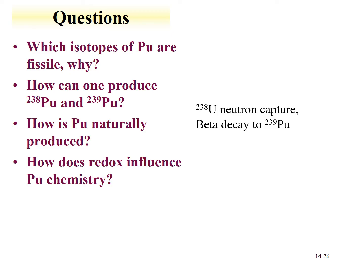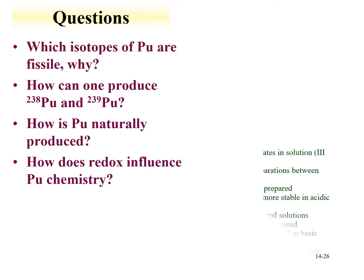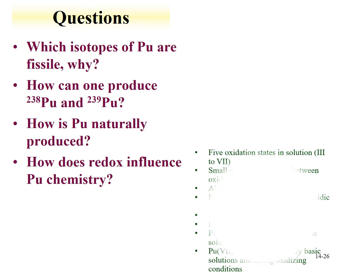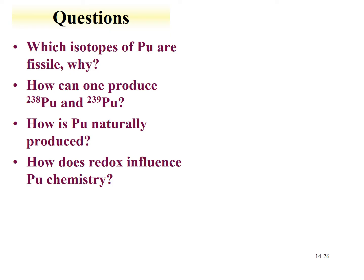How does redox chemistry influence plutonium? Plutonium has oxidation states in solution from +3 to +7 — +7 is difficult to make but can be observed. There are small energy gaps between the different oxidation states, meaning they can exist simultaneously in solution. General trends: lower oxidation states are more stable in acidic solutions, the pentavalent state is more stable in neutral solutions, and higher oxidation states are favored in basic solutions. The pentavalent state is also favored in dilute solutions because it can undergo disproportionation. Plutonium +7 is stable only in highly basic solutions with strong oxidizing conditions.